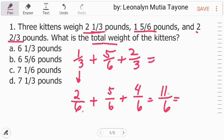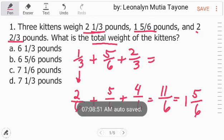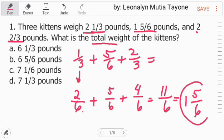So, itong improper fraction na ito, i-simplify natin. 11 divided by 6, bali 1 and 11 minus 6, and that is 5. So, kopyahin ang denominator na 6. So, ang lahat ng mga fraction ay equivalent ng 1 and 5 over 6.